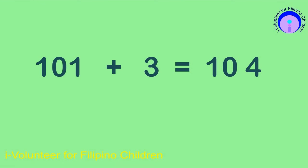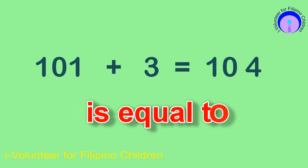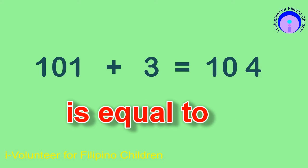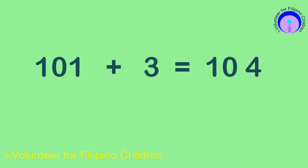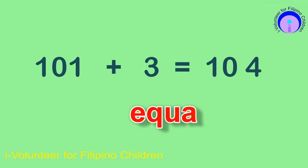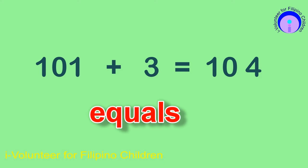This is read as: 101 plus 3 is equal to 104. The addition sentence can also be read as 101 plus 3 equals 104.